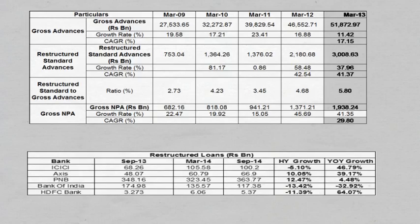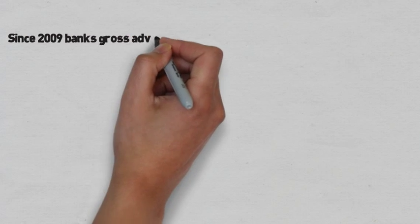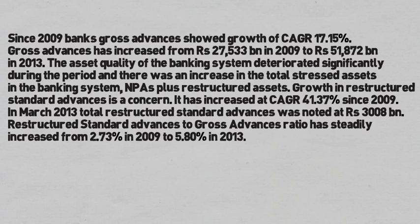Tables 1 and 2 show that since 2009, banks' gross advances showed growth of CAGR 17.15%. Gross advances increased from Rs. 27,533 billion in 2009 to Rs. 51,872 billion in 2013. The asset quality of the banking system deteriorated significantly during the period, with an increase in total stressed assets. Total stressed assets is NPAs plus restructured assets.